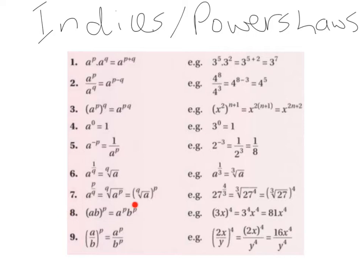Law 8: AB raised to the power of P can be broken down as A to the power of P multiplied by B to the power of P. An example: 3x raised to the power of 4 becomes 3 to the power of 4 multiplied by x to the power of 4. 3 to the power of 4 gives us 81, and x to the power of 4 stays as x to the power of 4, so we end up with 81x to the power of 4.